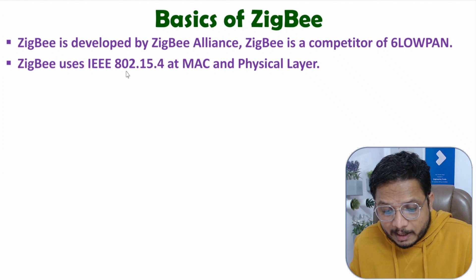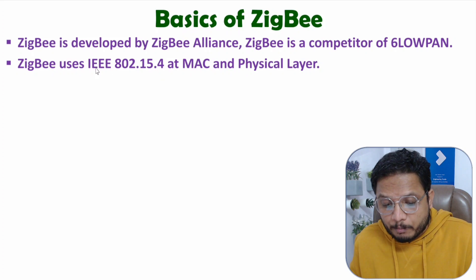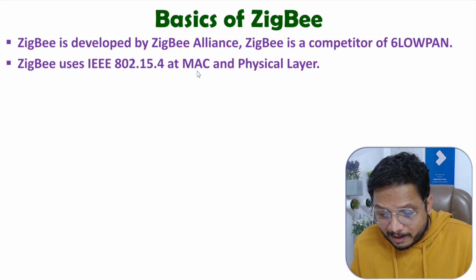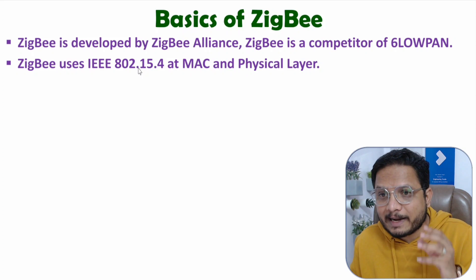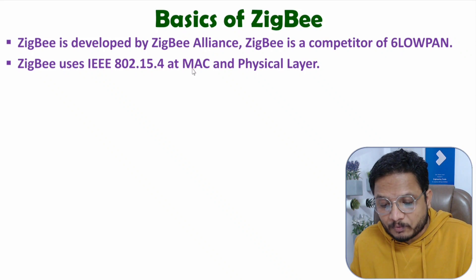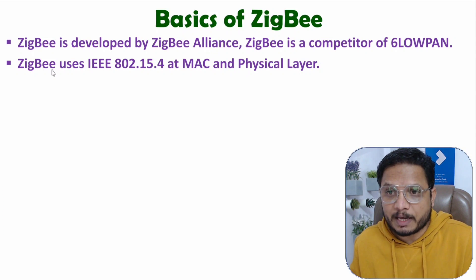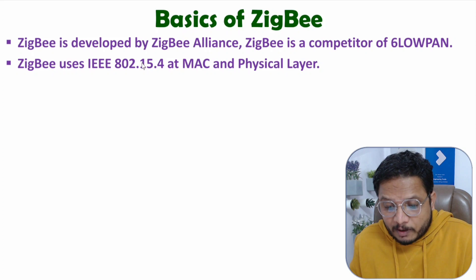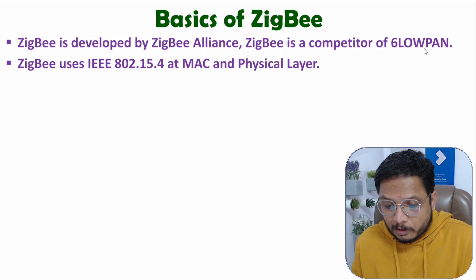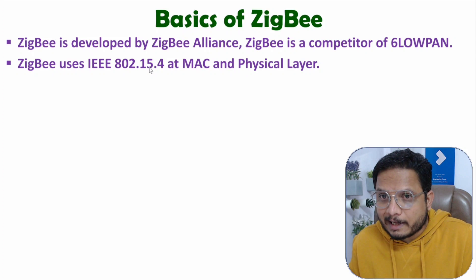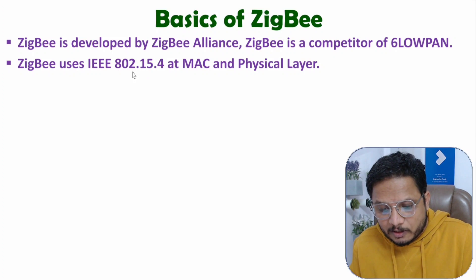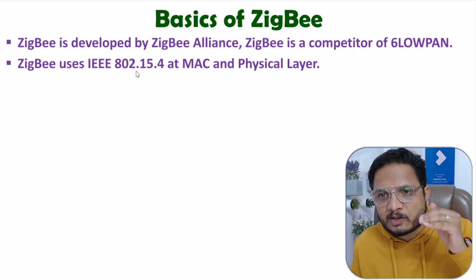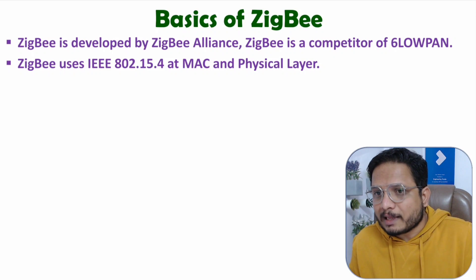ZigBee uses the IEEE 802.15.4 protocol, which works at the MAC and physical layer. ZigBee uses this protocol at the data link layer, where media access control comes into the picture, as well as at the physical layer. Similarly, 6LoWPAN also uses this protocol at the data link and physical layers. I have made a separate video on this protocol in the IoT lecture series.